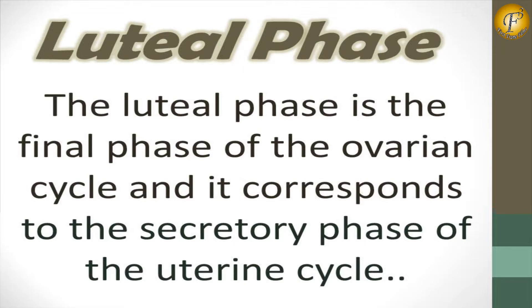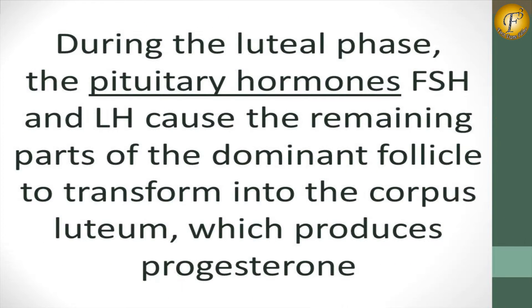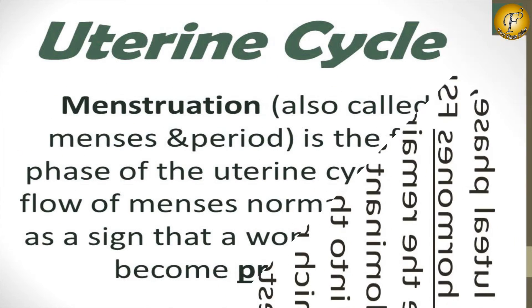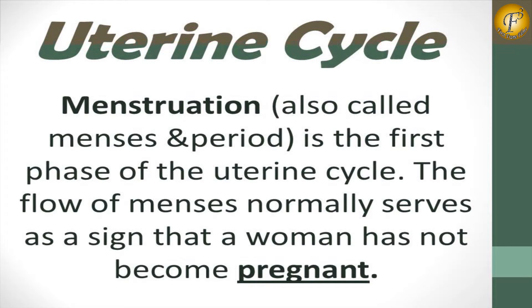The luteal phase is the final phase of the ovarian cycle and corresponds to the secretory phase of the uterine cycle. During the luteal phase, the pituitary hormones FSH and LH cause the remaining part of the dominant follicle to transform into the corpus luteum.